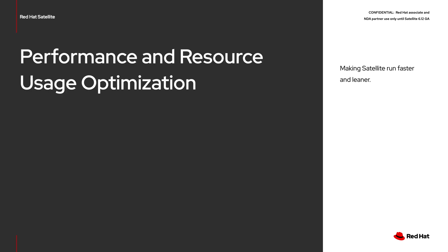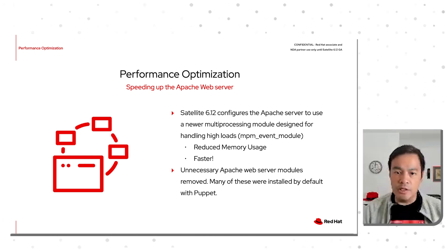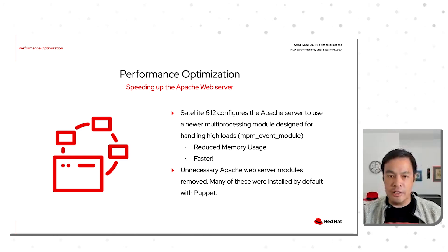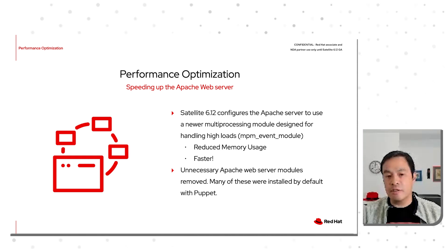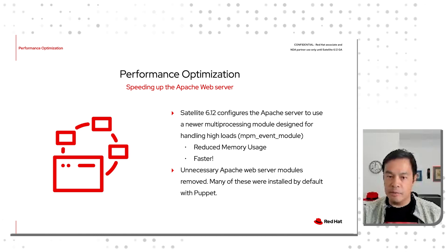Satellite 6.12 runs faster and consumes less resources than previous versions. Web server performance is improved through the update of modules in the Apache web server. In previous versions of Satellite, a lot of unnecessary Apache modules were installed by default because of Puppet requirements. Unnecessary modules have been removed. In general, these improvements will speed up API calls between hosts and capsules.